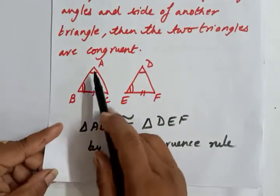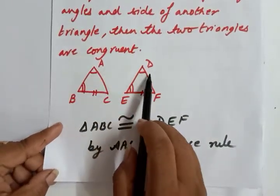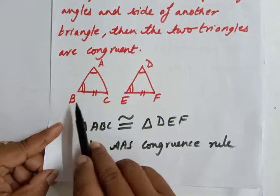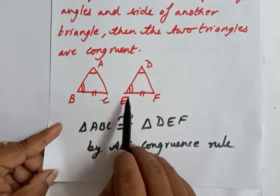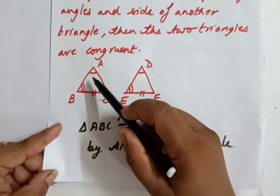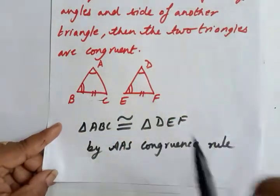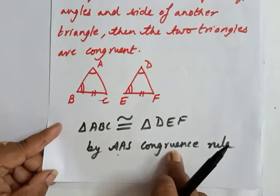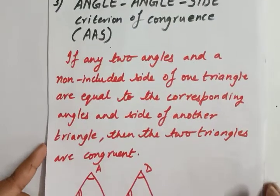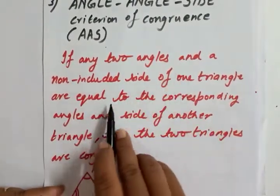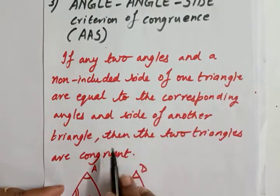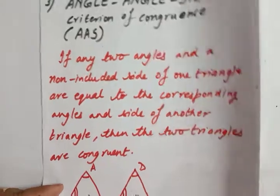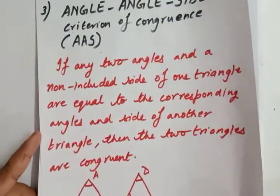The third rule is AAS: Angle-Angle-Side. The difference from ASA is that here the side is non-included - it is not between the two angles. If two angles and a non-included side of one triangle are equal to the corresponding angles and side of another triangle, then the two triangles are congruent. For example, angle A equals angle D, angle B equals angle E, and BC equals EF where BC is not the included side.